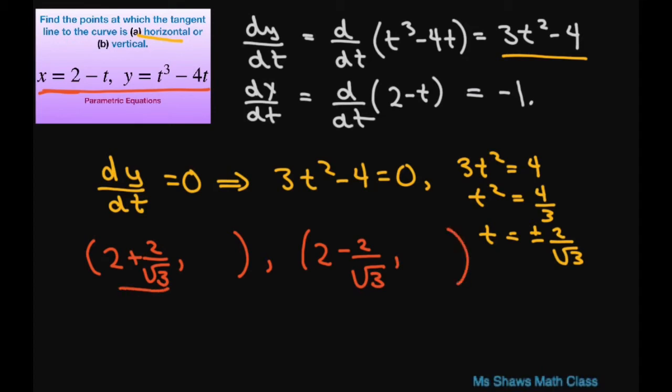Substituting this in for our y, you substitute that in and you're going to get negative 16 square root of 3 divided by 9. And this one's going to be positive 16 square root of 3 divided by 9.